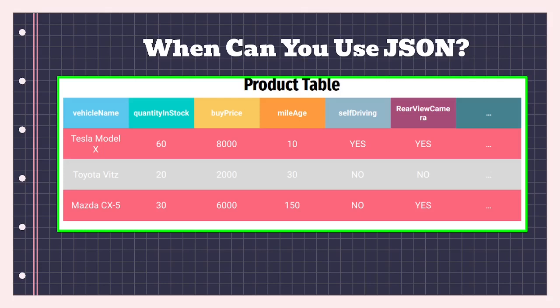So this product table has vehicle name, quantity in stock, buy price, mileage, self-driving car (yes or no), and a rear view camera column — some cars have a rear view camera so you can see what's going on behind when reversing. Cars have many features, and as we go into the future more and more cars are becoming self-driving. We have the Tesla Model X which is self-driving, the Toyota Fit and Mazda CX-5 which are not self-driving. The Tesla should have a rear view camera.